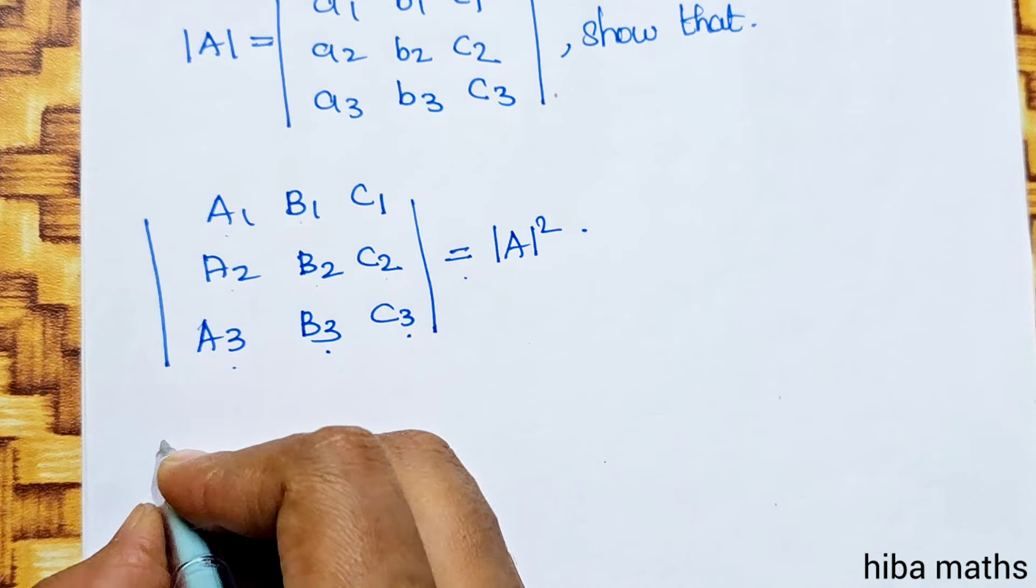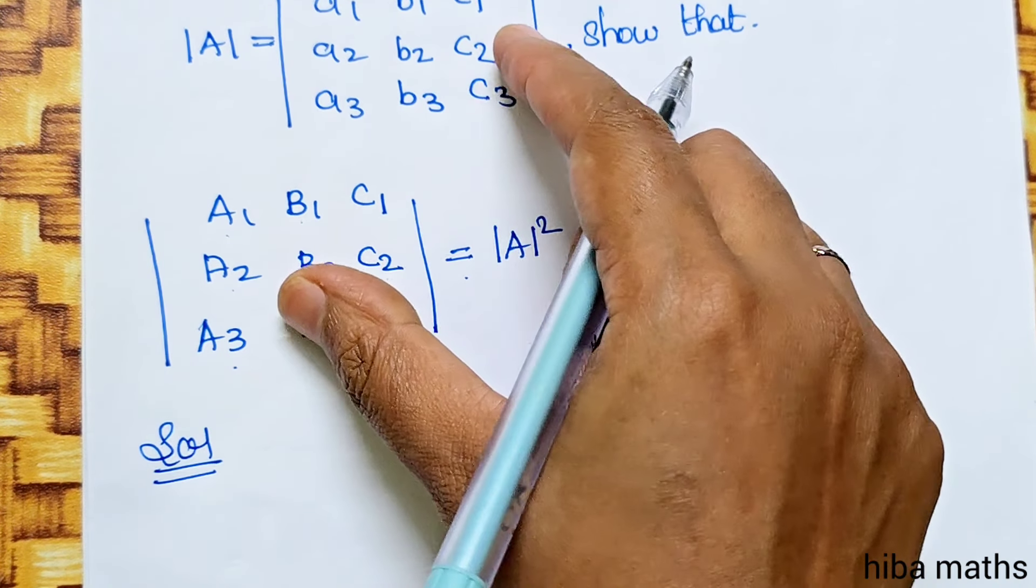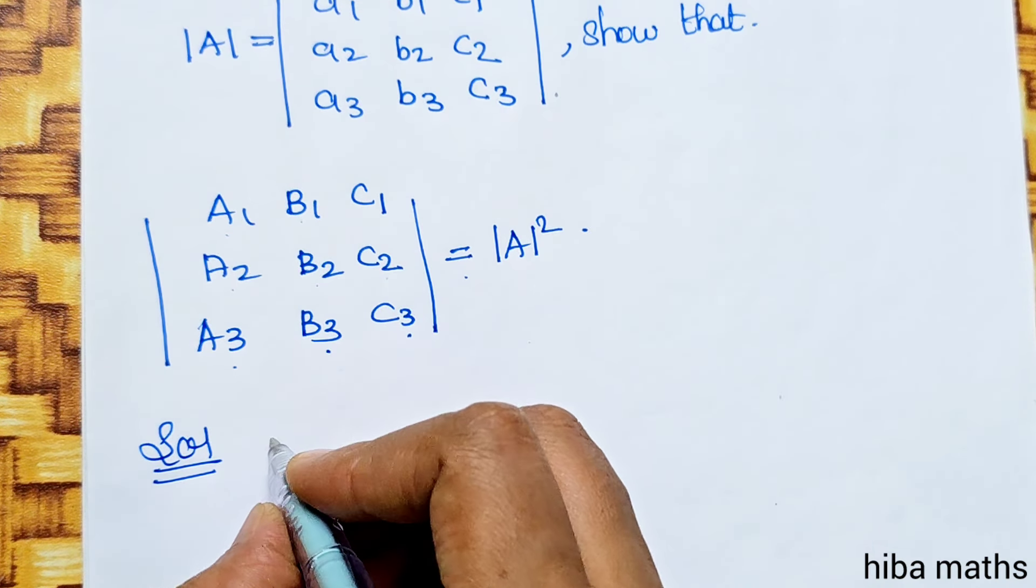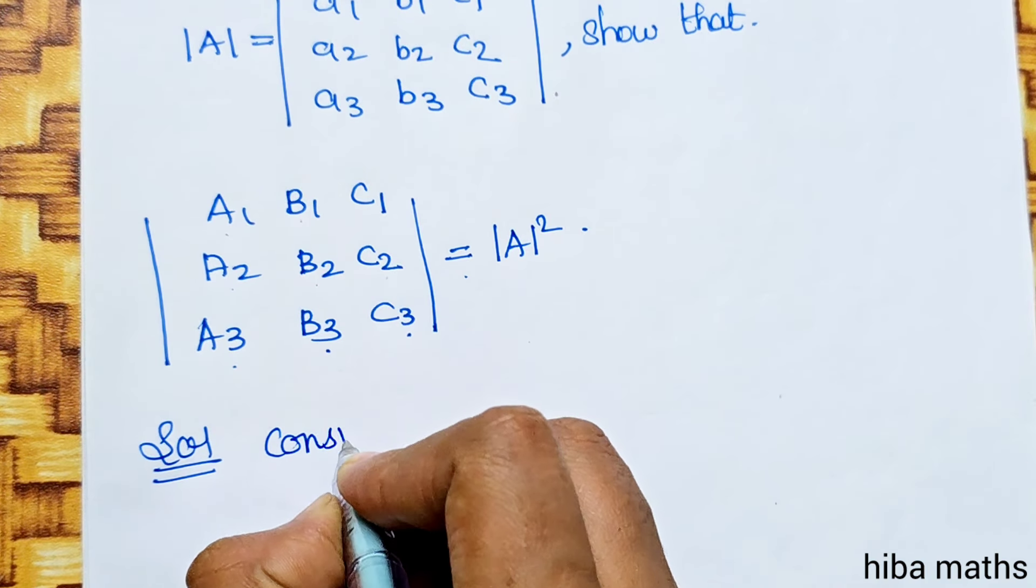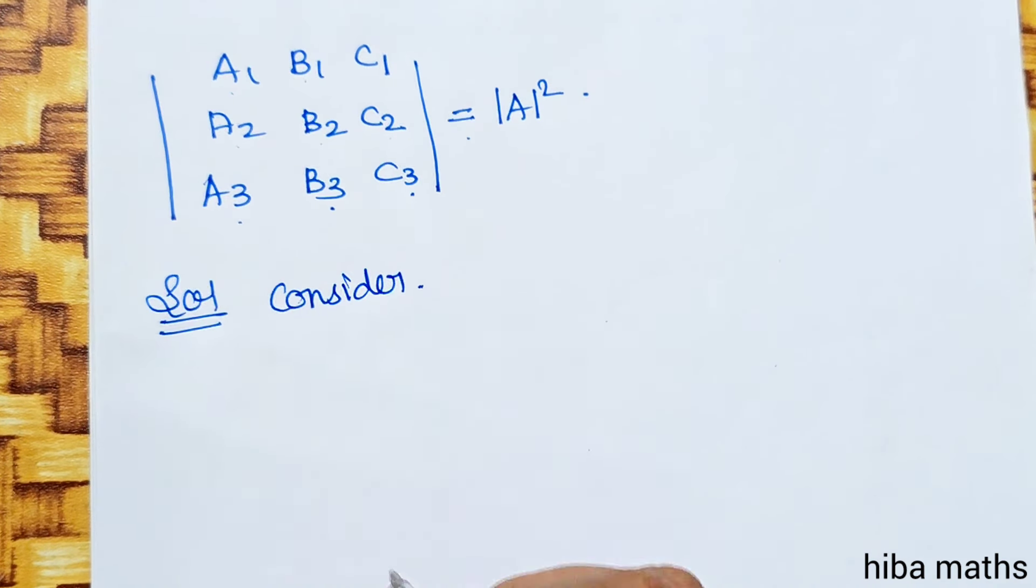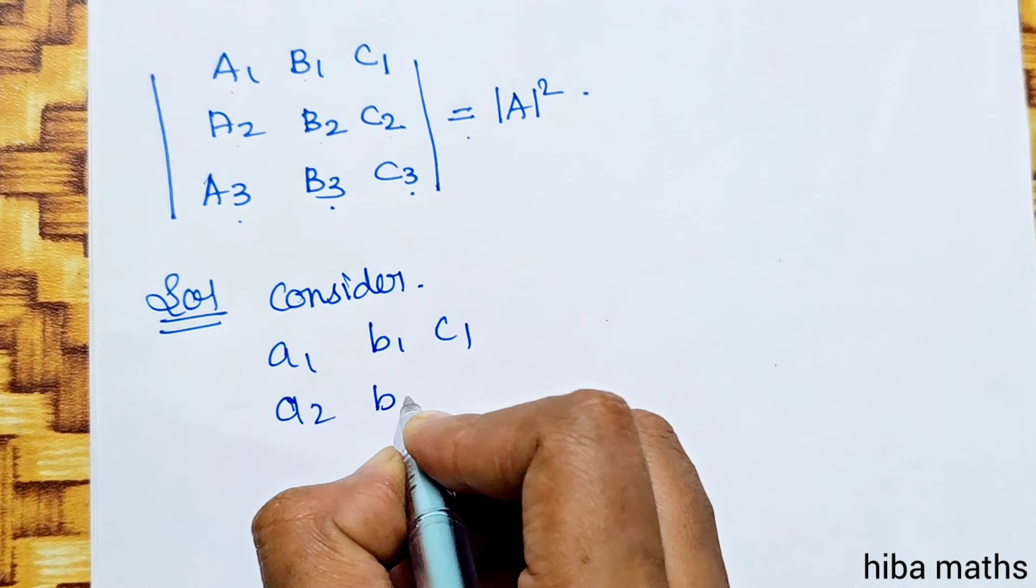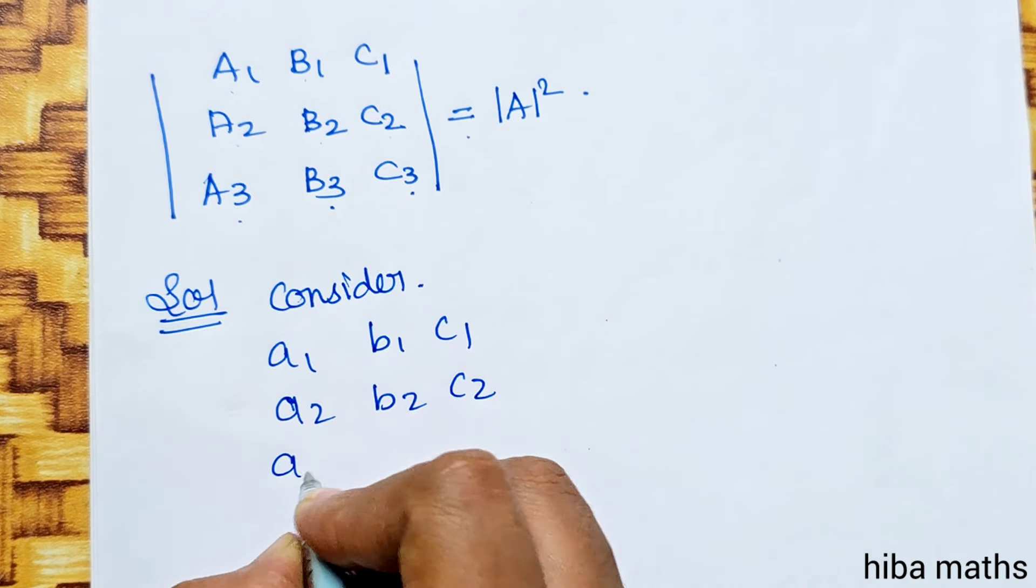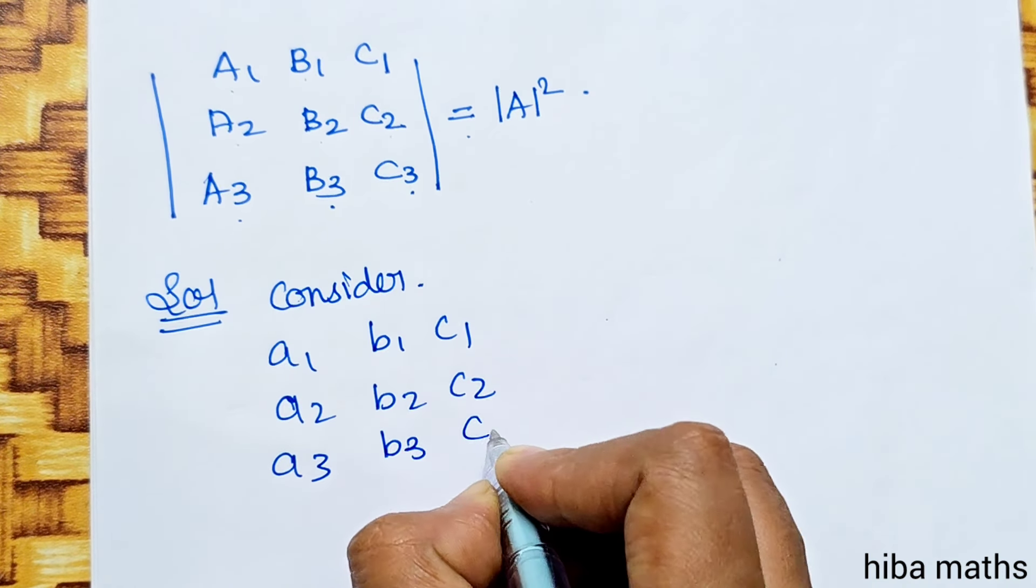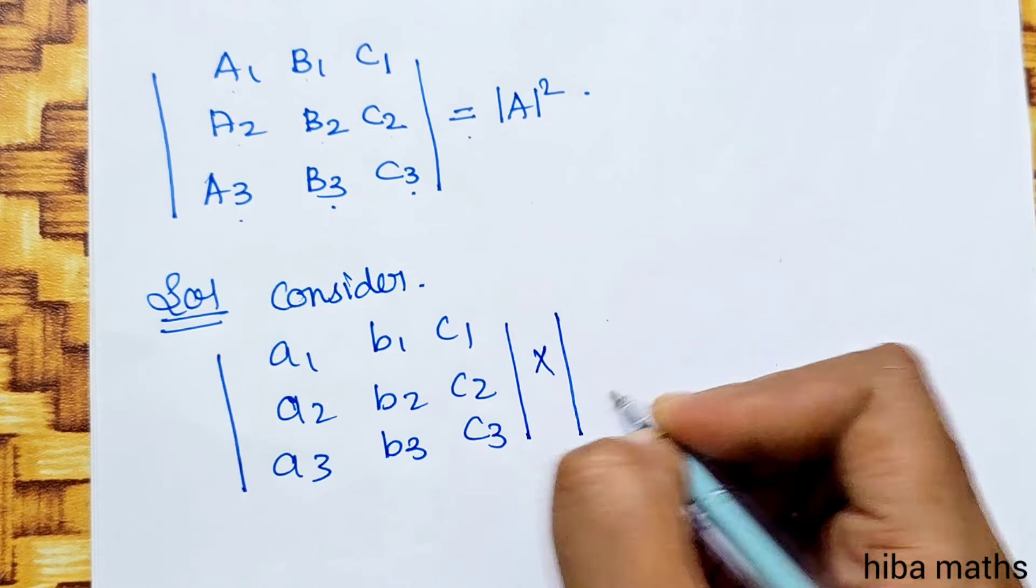Now we have to solve this sum. We will multiply the two matrices in the solution.